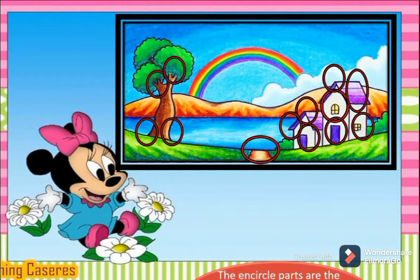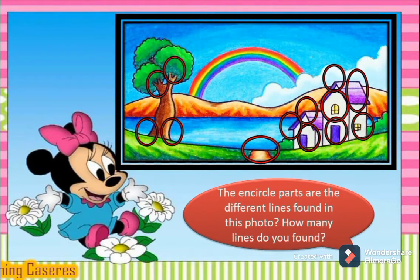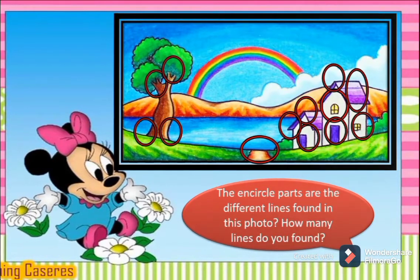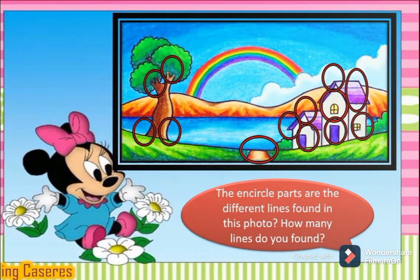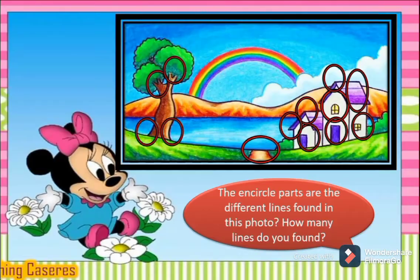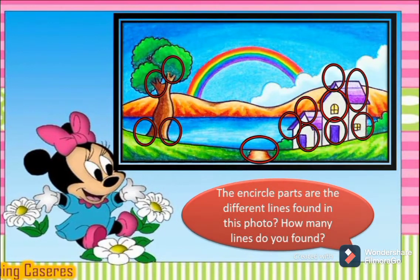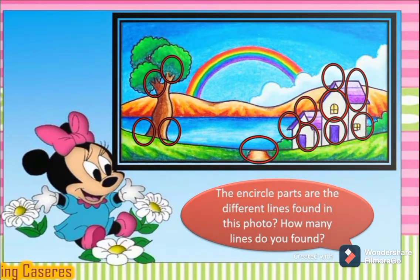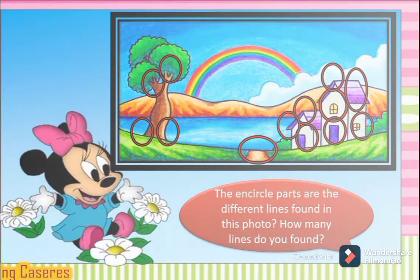How many lines do you have? Okay, so we have here the picture. As you can see, there are encircled parts. These encircled parts are the lines that can be found in this photo.